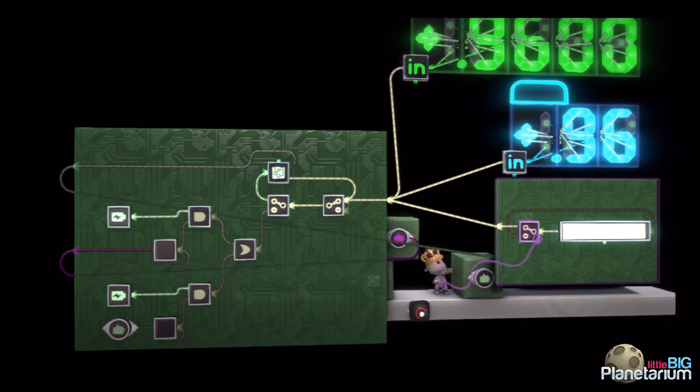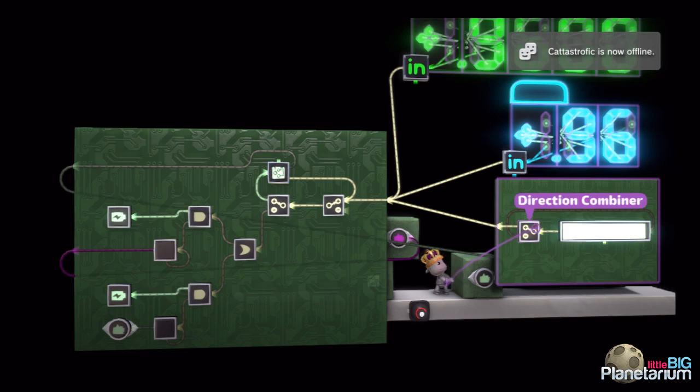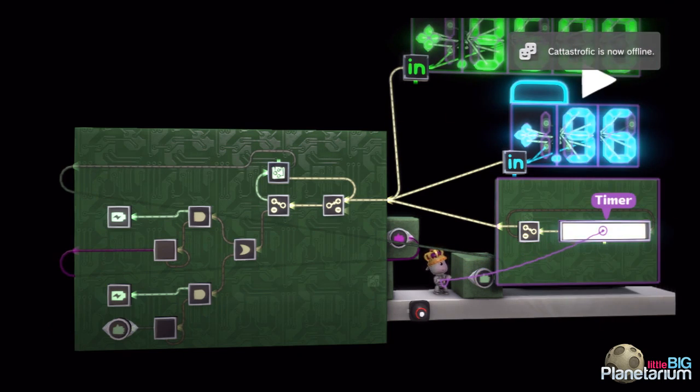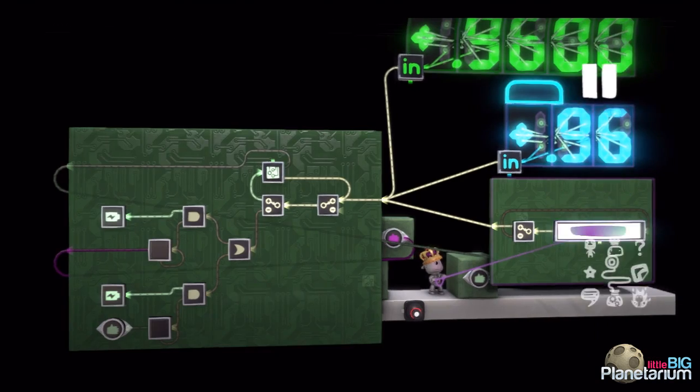Now, what that does is it takes that signal coming in and it says whatever that signal's at, let's say it's at 90%. If my timer was at, say, zero, let me just pause it. If my timer was at zero, this timer would be all the way down at the bottom. And so I'd have 90% signal coming in. Our timer would be outputting 0.